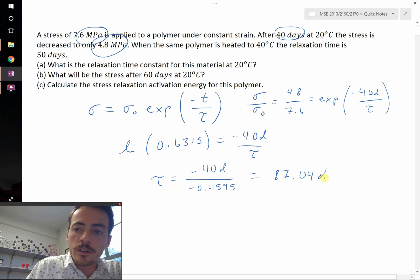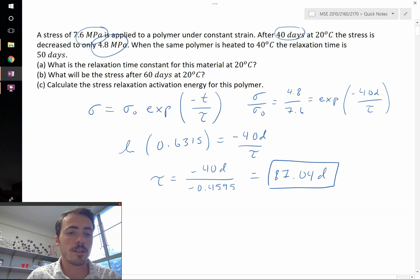So at 20 degrees Celsius, that is our relaxation time constant for this material. What does the relaxation time constant even mean? It means that after this number of days, 87 days, the stress will be reduced by 1 divided by E, the natural number, or about 37%. So we're going to have about 37% of what our initial stress was. Now that depends on the temperature, so that's going to be a different number for 40 degrees Celsius as we see in the question. It says that value is only 50 degrees if you heat this polymer up. We're going to come back to that.